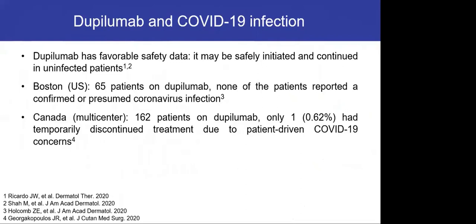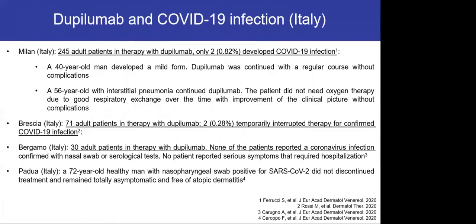Regarding dupilumab and COVID-19: dupilumab has a very favorable safety profile, and most experts indicate it may be safely initiated and continued in uninfected patients. Several reports from North America and Europe indicate dupilumab can be safely continued even in infected patients. In Italy, at least three studies indicate that adult patients under dupilumab had only a tiny fraction develop COVID-19 infection, and of those few patients, they could have a regular course of the disease without additional complications.